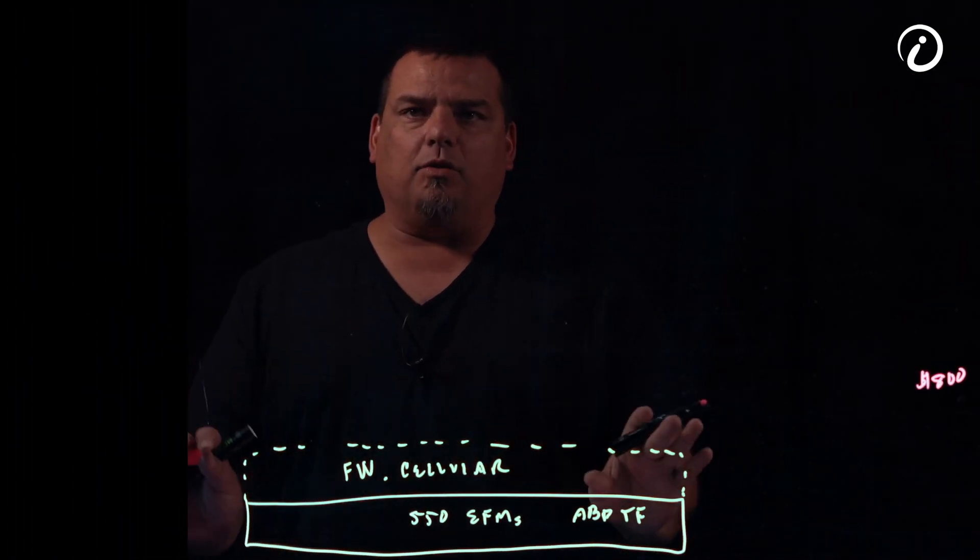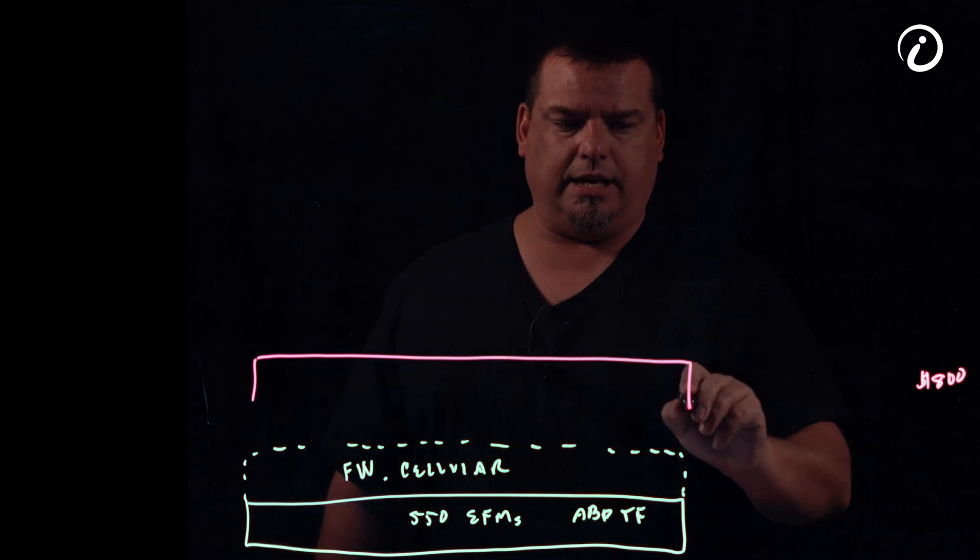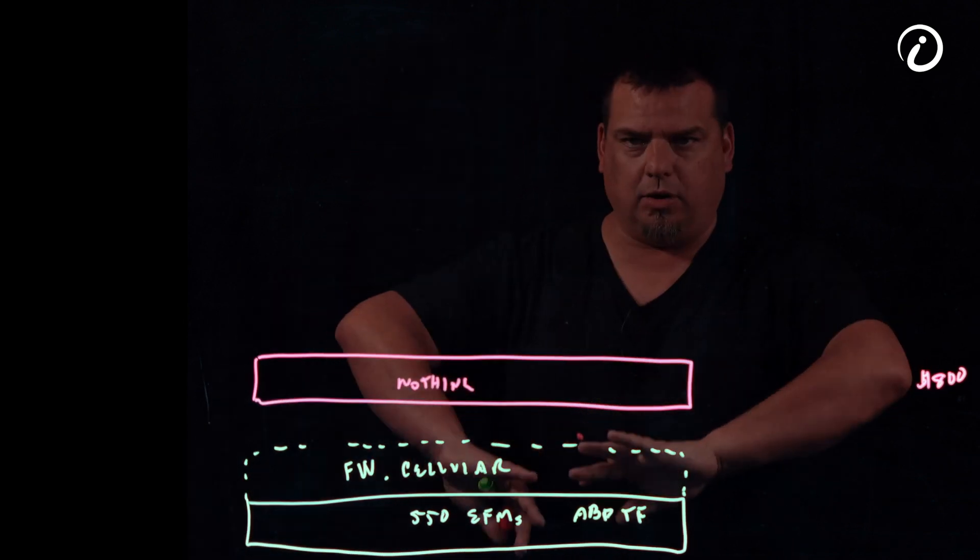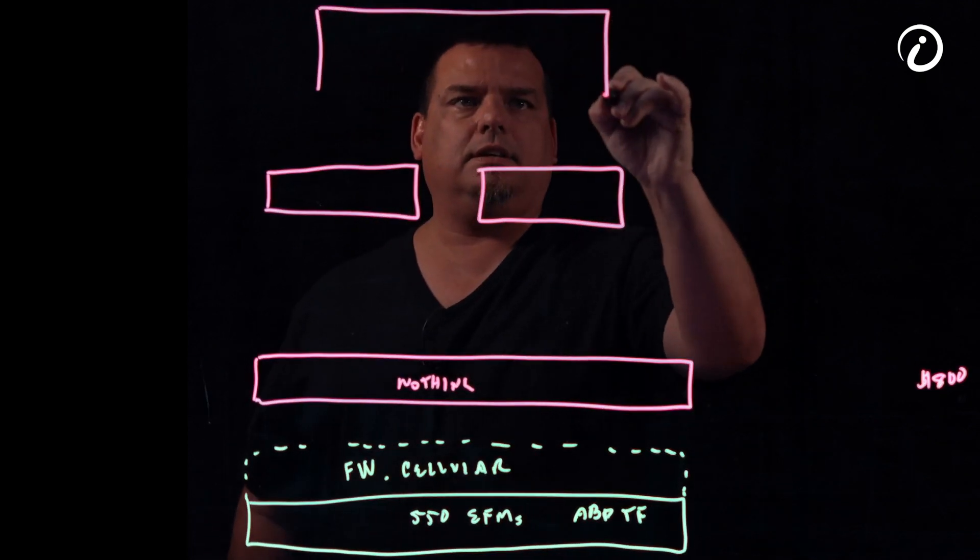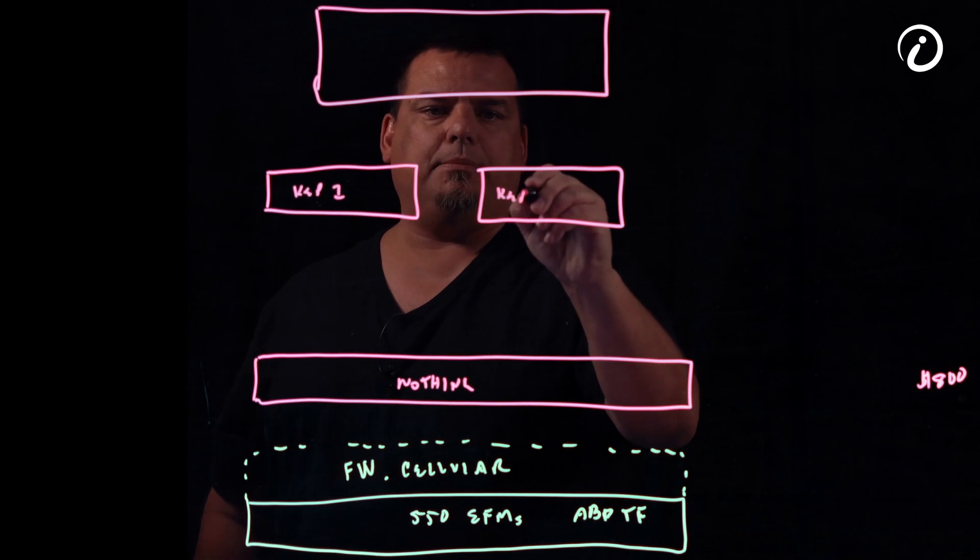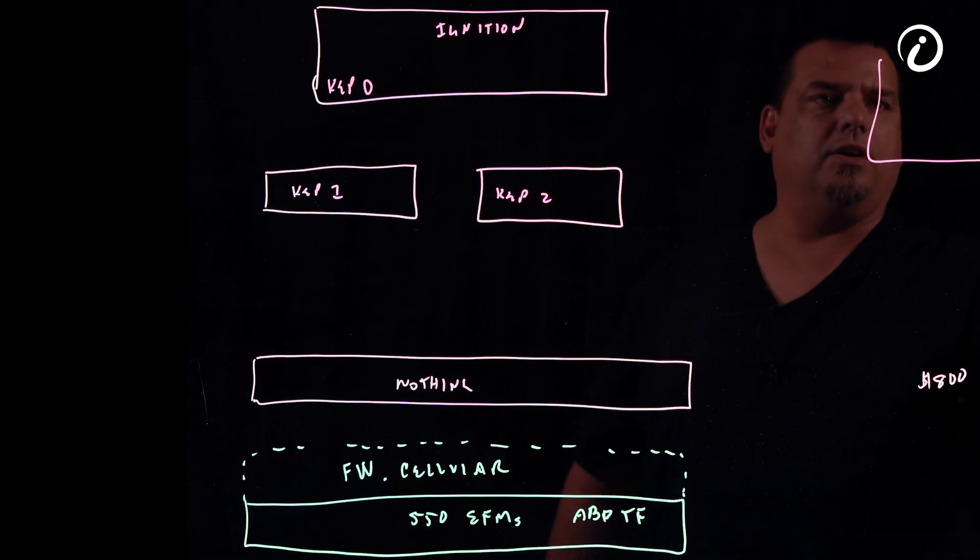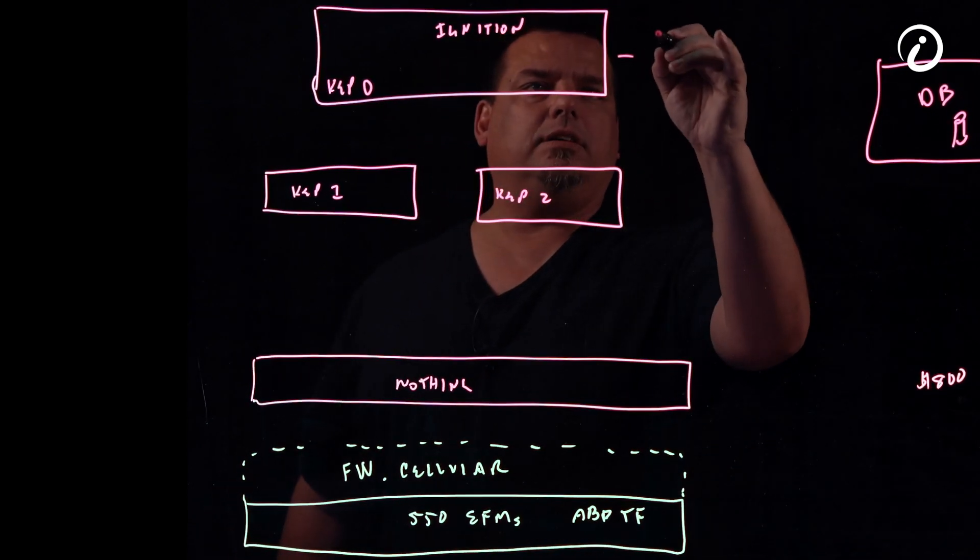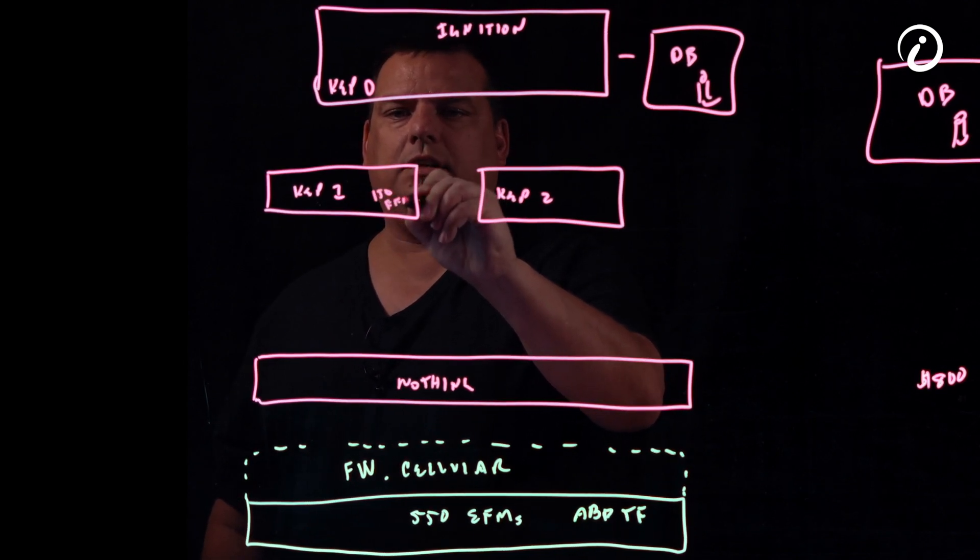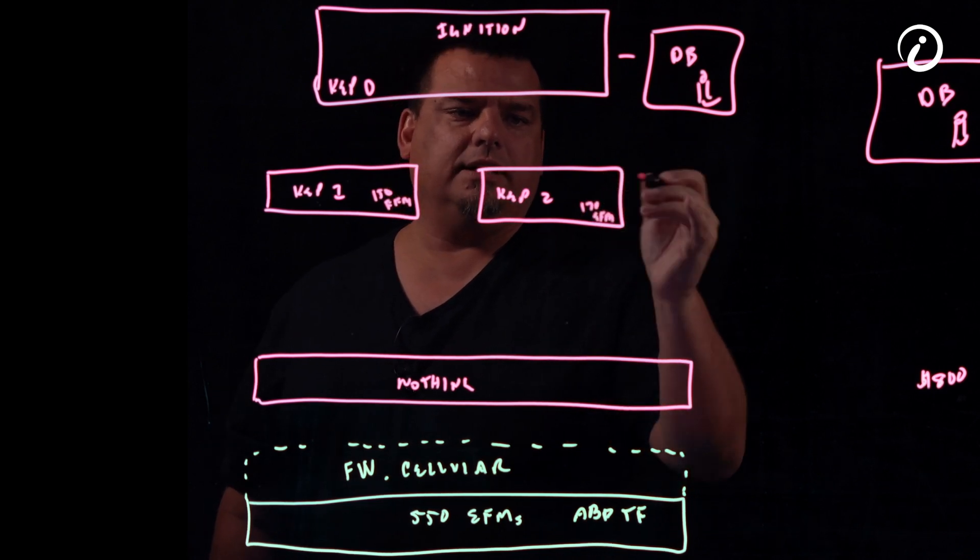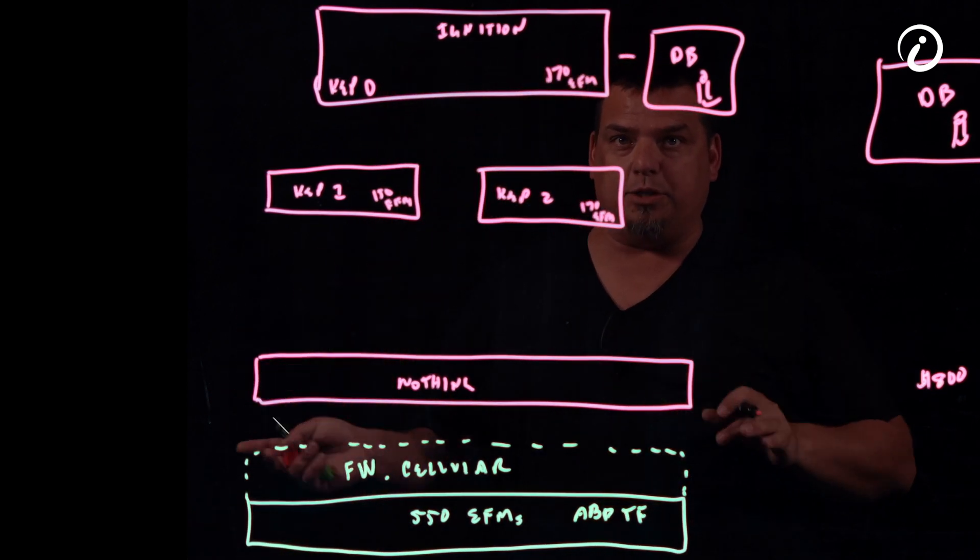Let's switch over here. So over here we're over freewave and cellular and this is what we have now. We are using nothing on the edge. There's nothing on the edge. We don't have anything out on the edge at all. What we have is up here we have Kepware one, Kepware two, we have Ignition, we have Kepware zero. We have our database and over here we have our database. We have 150 EFMs configured there, 170 EFMs configured there, and 170 EFMs configured here. So we have three separate poll response environments. You want to know why?